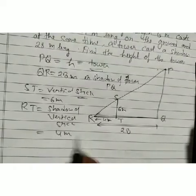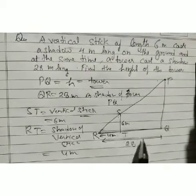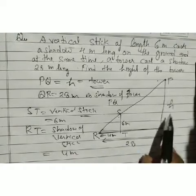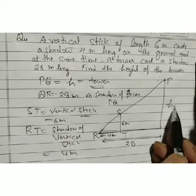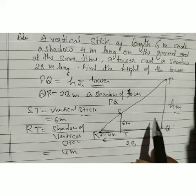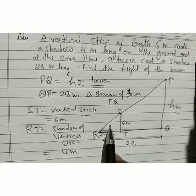We need to find height PQ = H. To do this, we show that triangle PQR is similar to triangle STR. If we can prove this similarity, we can use the ratio of corresponding sides.